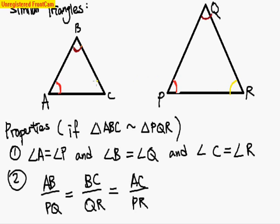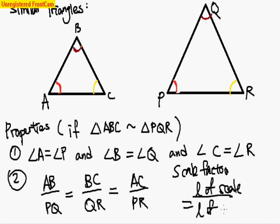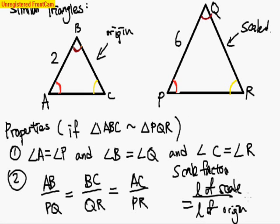The second property would be the corresponding lengths would have the same scale factor. So scale factor is the length of the scaled figure over the length of the original figure. If I call this the scaled one and this the original one, and if the length of AB is 2 and the length of PQ is 6, the scale factor would be 6 over 2, which is 3.